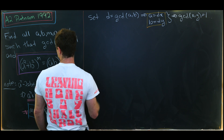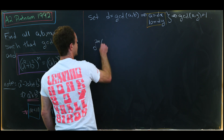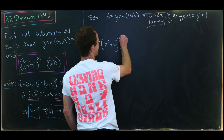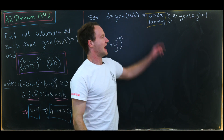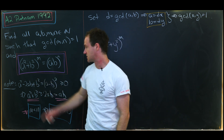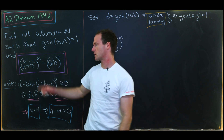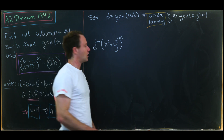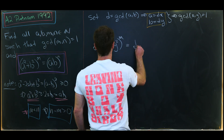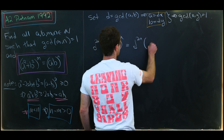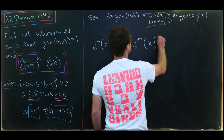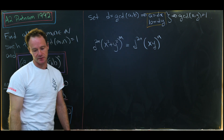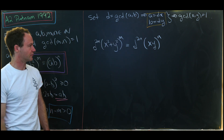Now we plug this new setup of A and B into our original equation. That gives us d^(2M) times (x² + y²)^M on the left. A² gives d²x² and B² gives d²y², so we factor out d^(2M). On the right hand side we get d^(2N) times (xy)^N, since A times B gives a d times d factor.